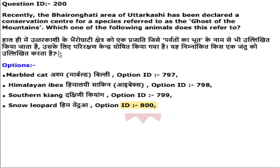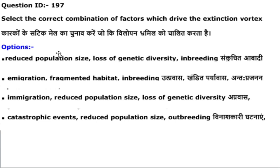The Bairongati area of Uttarkashi has been declared a conservation center for the species referred to as the 'ghost of mountain.' This animal, featured in a 2019 film, is the snow leopard, which lives in the Himalayan region and is considered a significant animal for people living there.